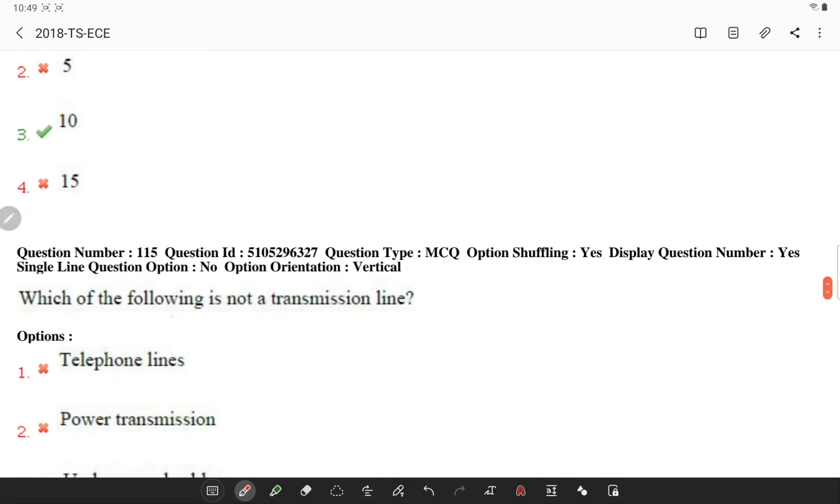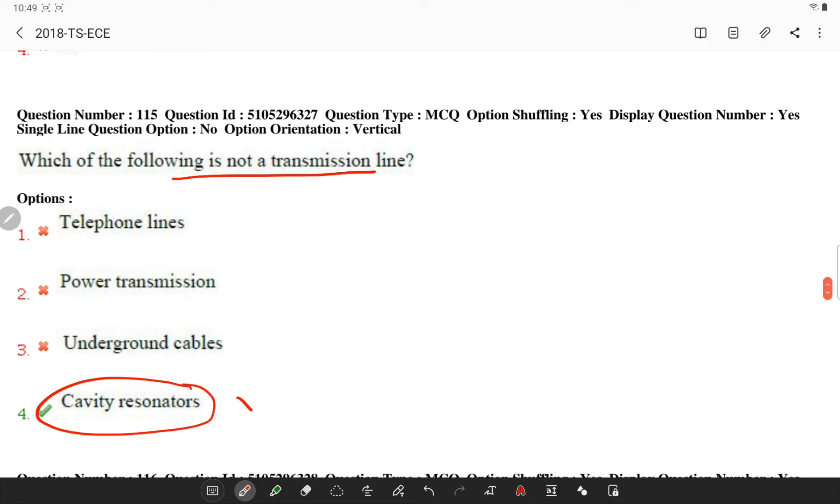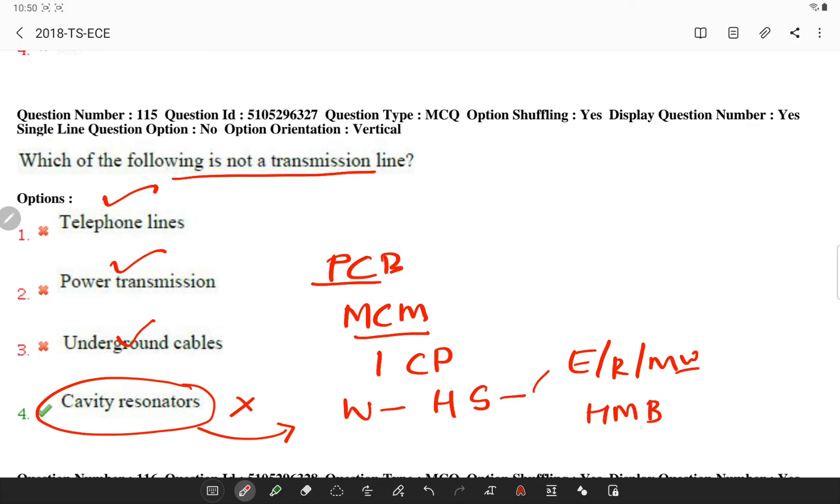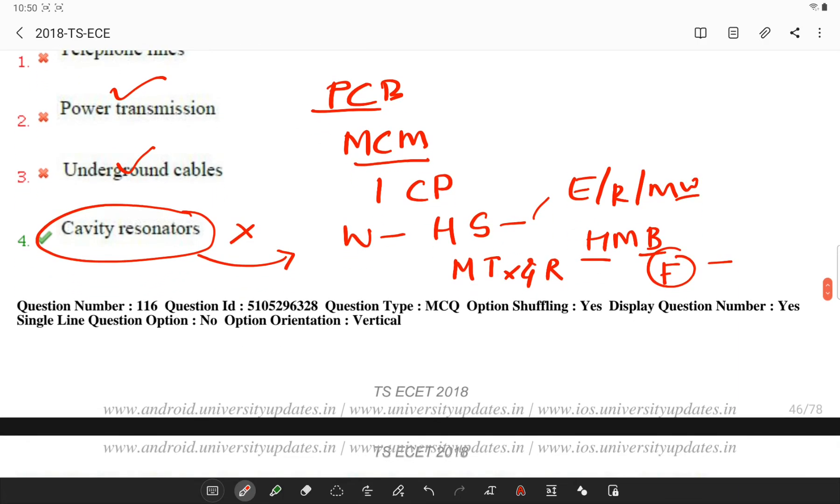Which of the following is not a transmission line? Cavity resonator is not a transmission line. Generally transmission lines are used in various applications like telephones, power transmission, underground cables, and they are also used in traces of PCB and traces of multi-chip modules, also in integrated circuit packages. What is a cavity resonator? It is one of the waves which exist in hollow space inside a device. It is used in electronics and radio and microwave cavities consisting of hollow metal boxes, which are used in microwave transmitters and receivers to control frequency in place to the tuned circuit, which are used for lower frequencies.